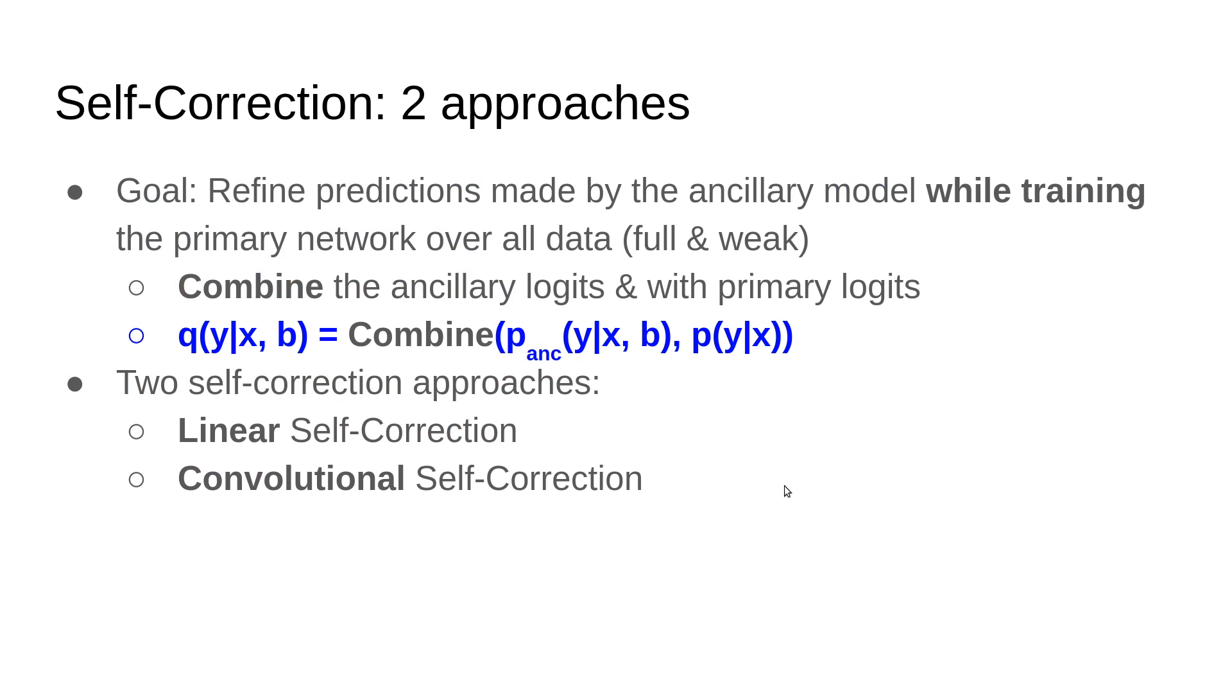So far, we just extracted the logits and used them as is. One question is: can we actually improve these logits during the training of this new primary model? Specifically, we'd like to combine two distributions: the fixed distribution p_anc(y|x,b) given the image and bounding boxes, and p(y|x) which is the current primary network. We offer two kinds of self-correction approaches: linear self-correction and convolutional self-correction.